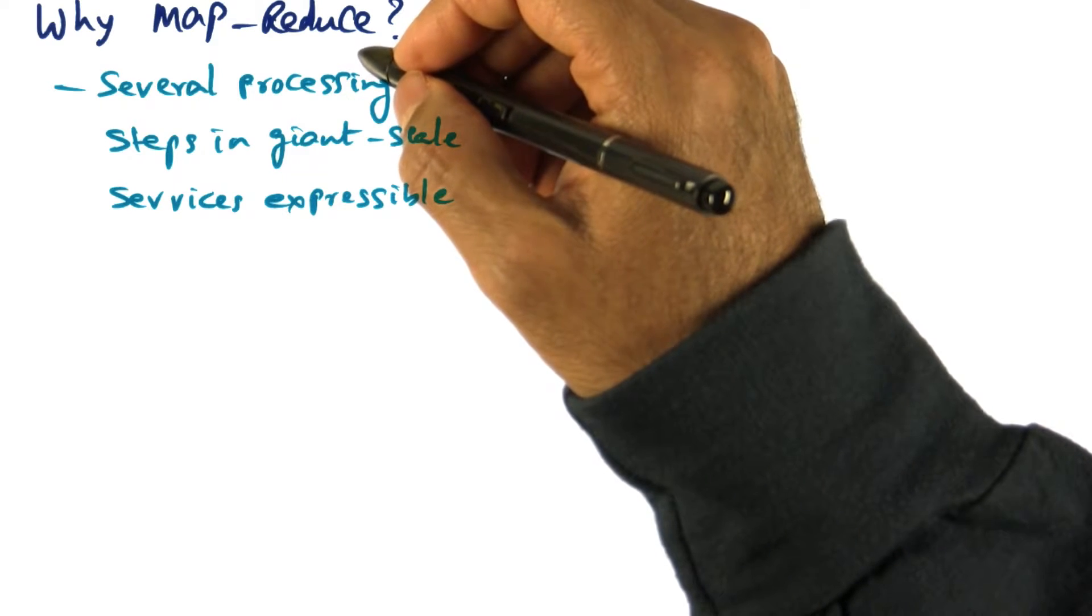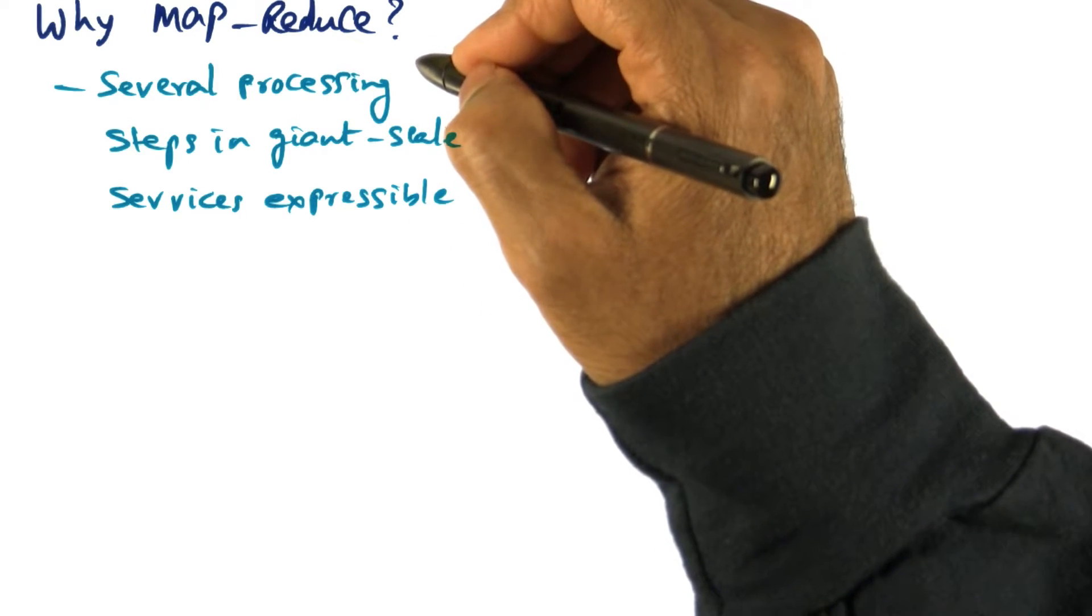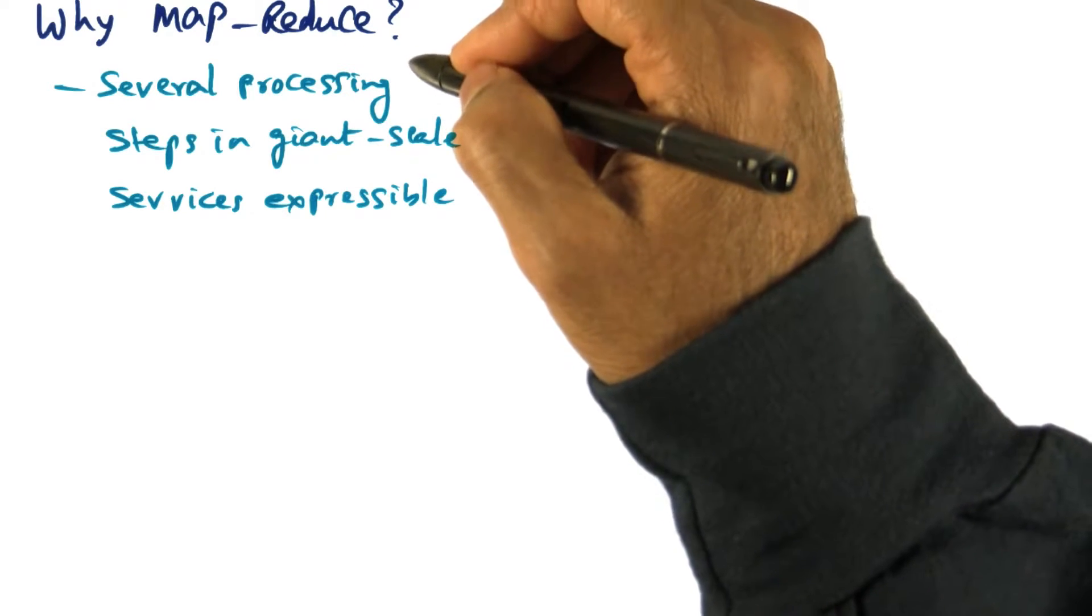It turns out that several processing steps in giant scale services are expressible as MapReduce.